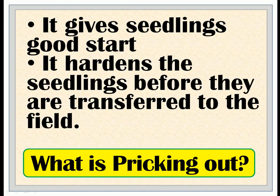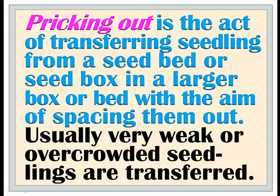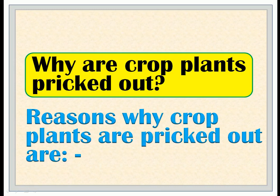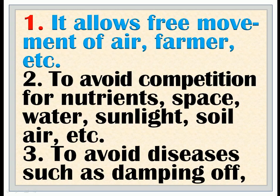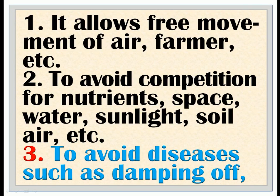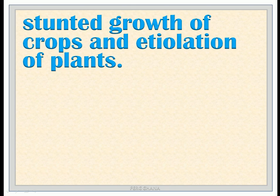What is pricking out? Pricking out is the act of transferring seedlings from a seed bed or seed box into a larger box or bed with the aim of spacing them out. Usually very weak or overcrowded seedlings are transferred. Reasons why crop plants are pricked out: 1. It allows free movement of air, farmer, etc.; 2. To avoid competition for nutrients, space, water, sunlight, soil, air, etc.; 3. To avoid diseases such as damping off, stunted growth of crops, and etiolation of plants.